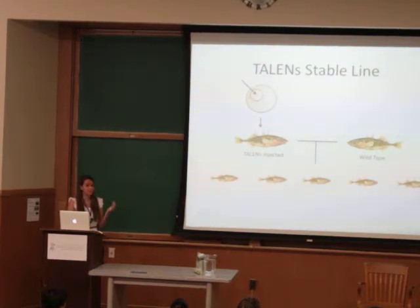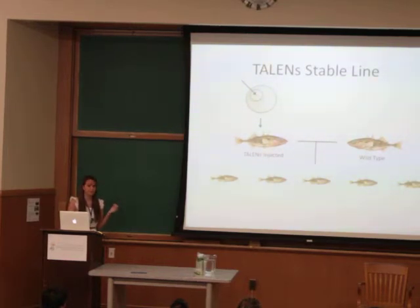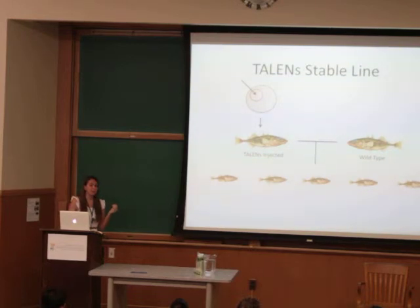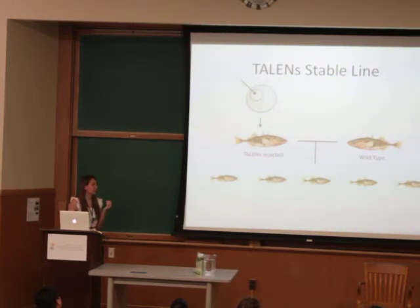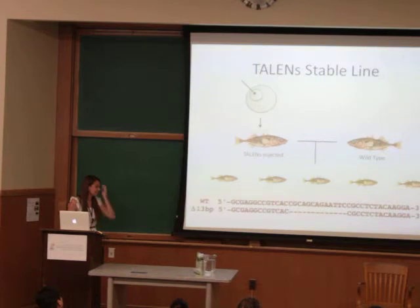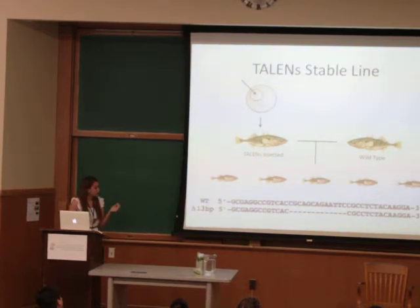We were able to do this this summer with a TALENS-injected female, which we crossed with a wild-type male. When analyzing the offspring, we found that 25% had a 13-base-pair-deleted BMP6 gene. Therefore, we successfully generated a BMP6-deleted stable line.